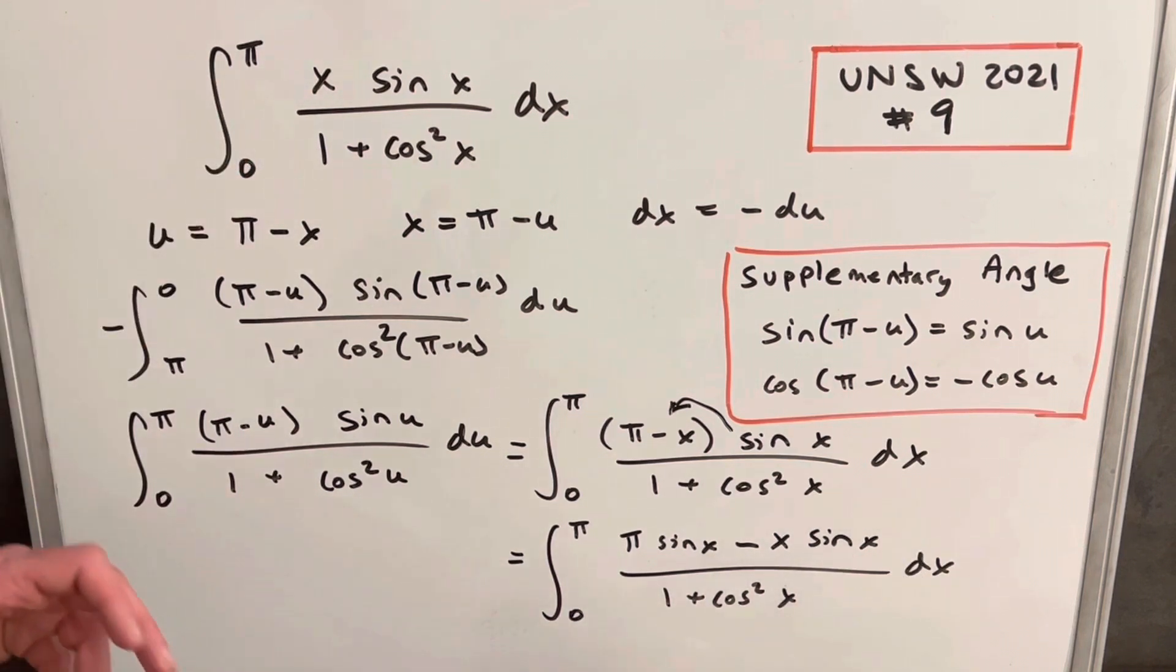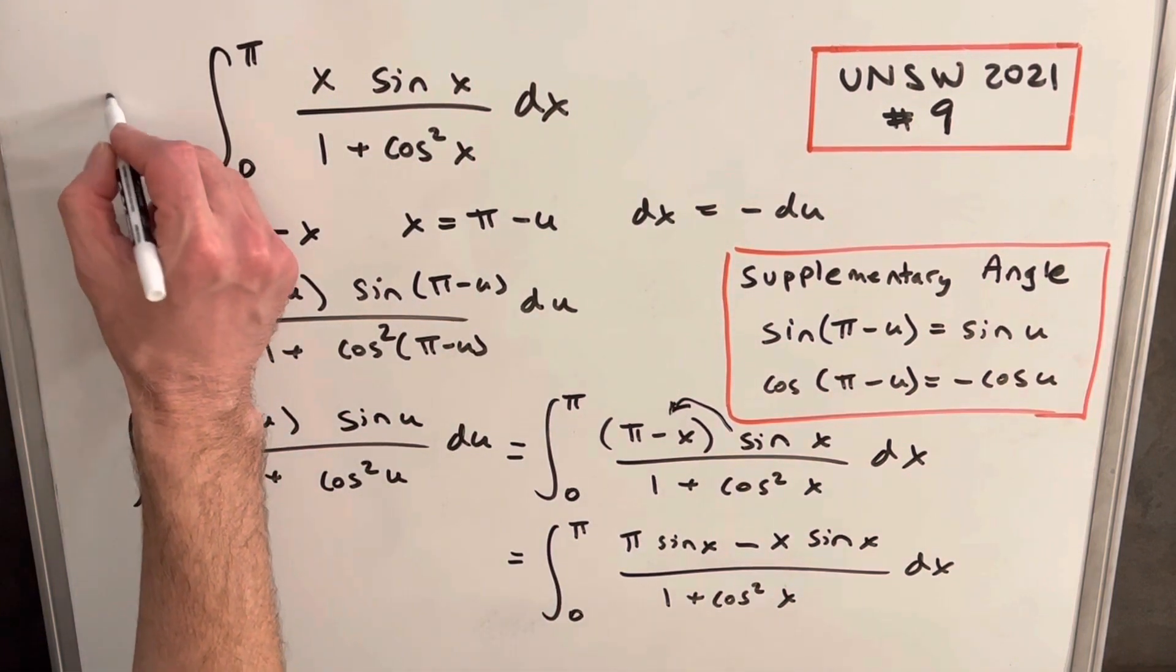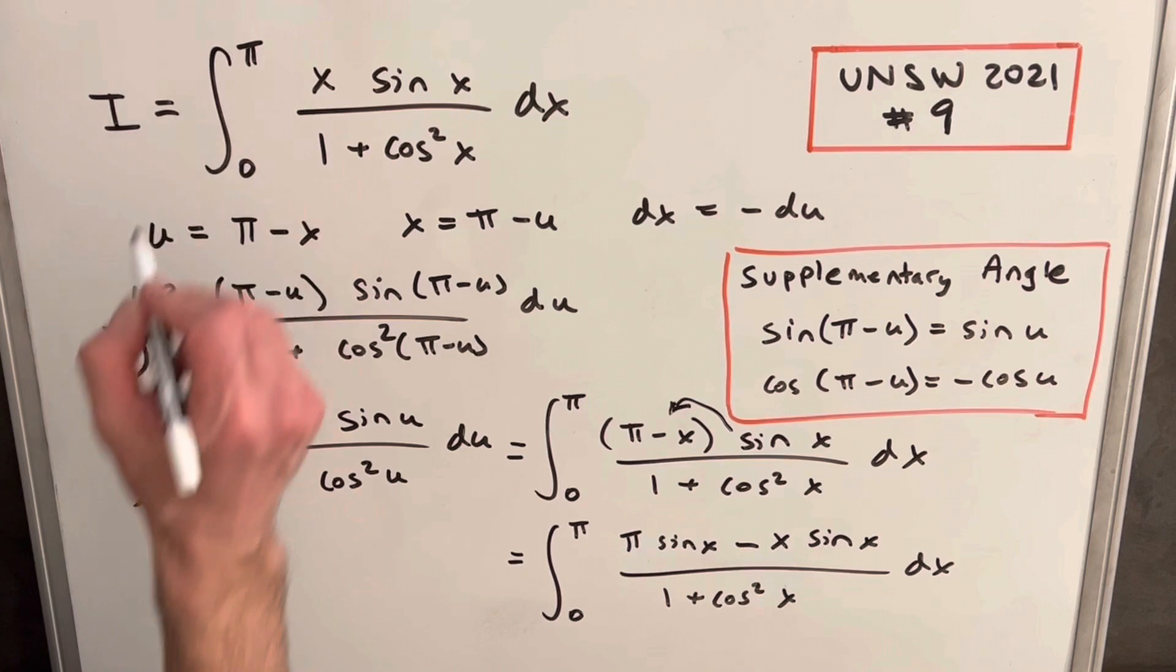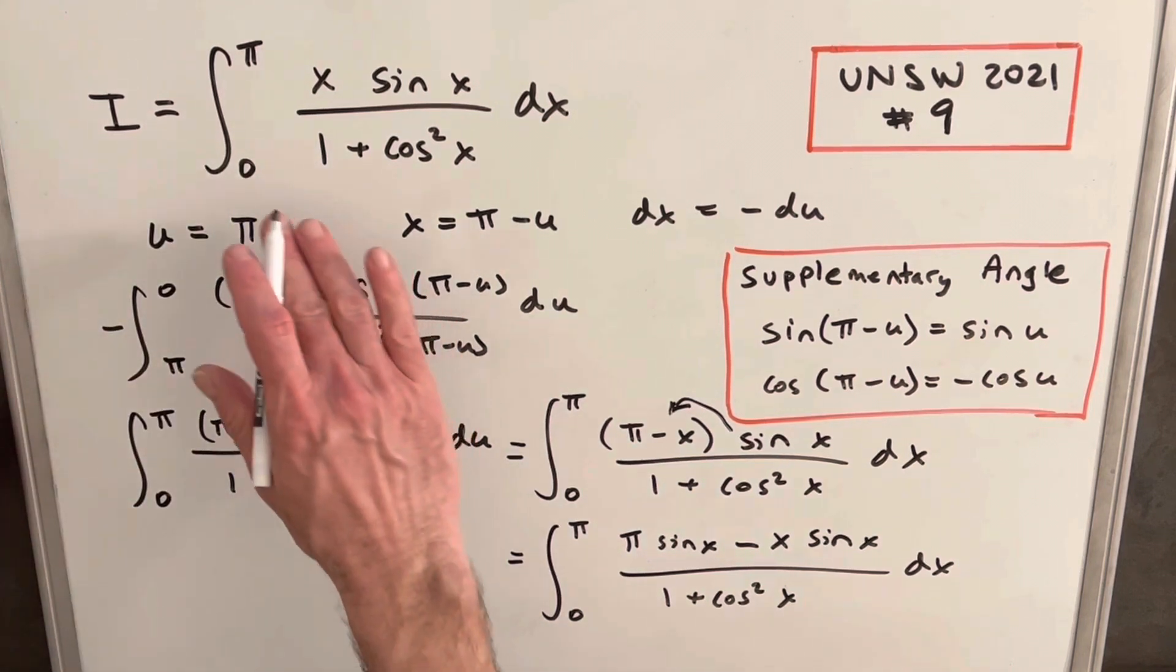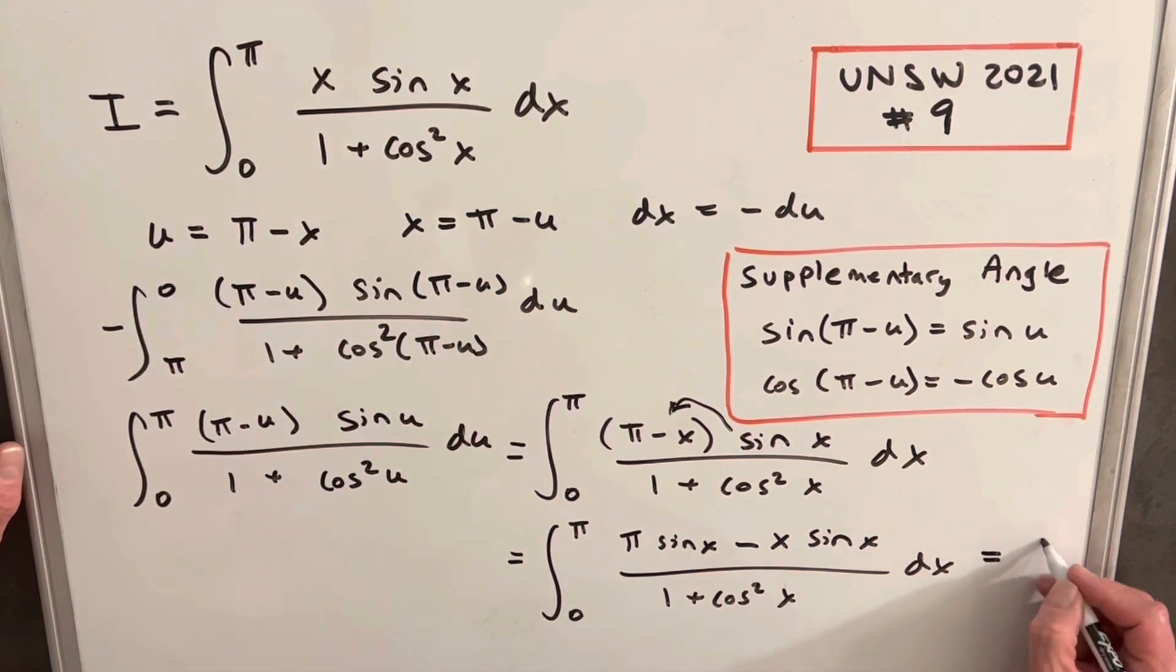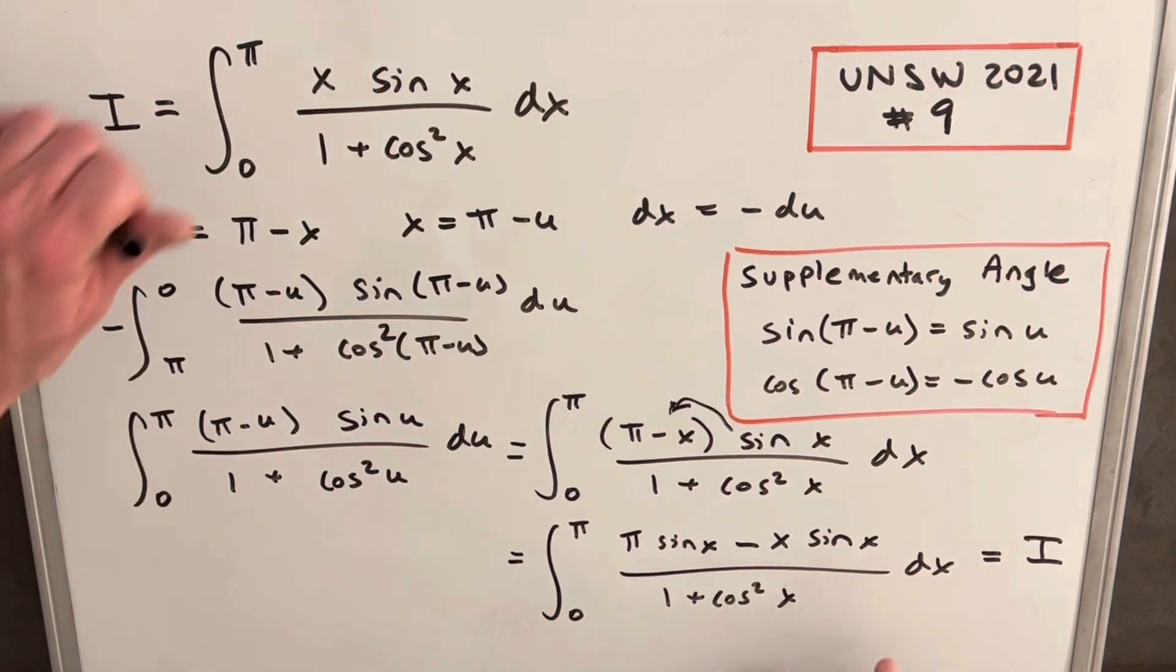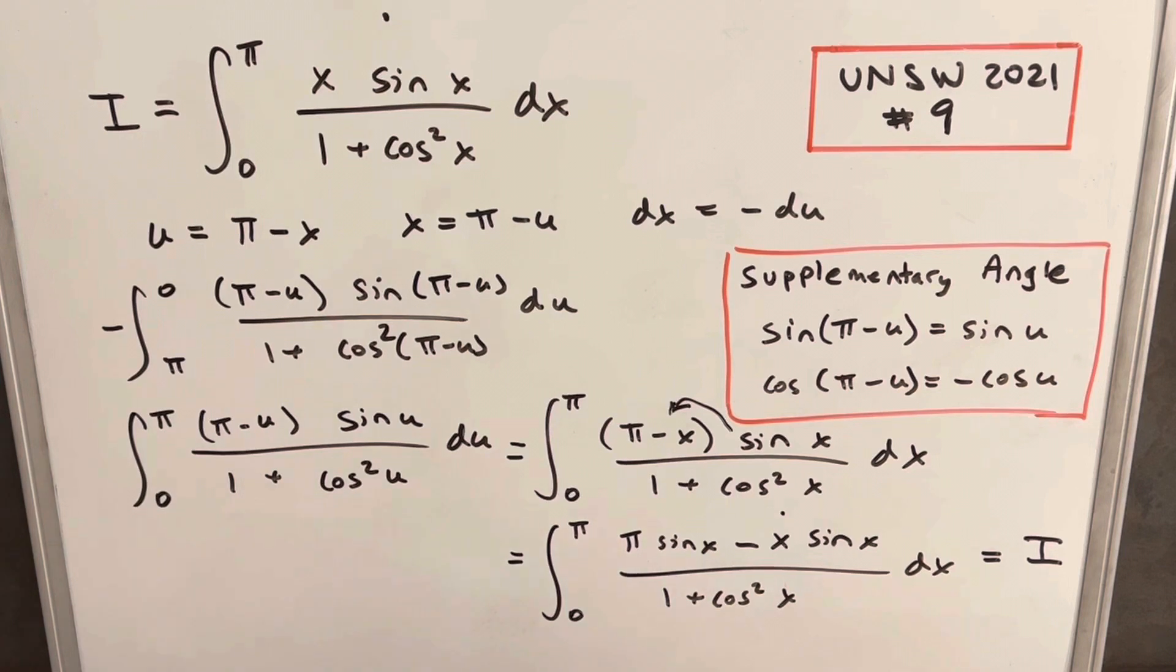So what I want to do actually, I think if we just add these two integrals together, we're going to be in better shape. I'm going to call this integral I. And then we just transformed it so then this integral has to also be I. So when we add this and we add this, we're going to end up with 2I. So let's see what that looks like.